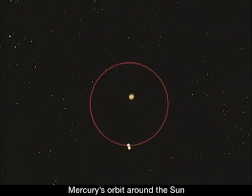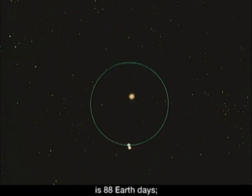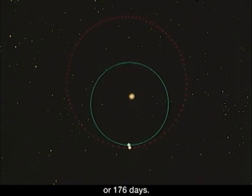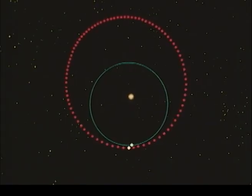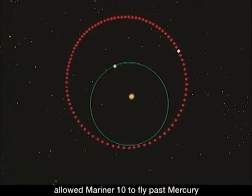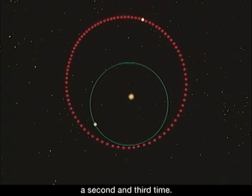Mercury's orbit around the Sun is 88 Earth days. Mariner 10's orbit was twice as long, or 176 days. These synchronous orbits allowed Mariner 10 to fly past Mercury a second and third time.